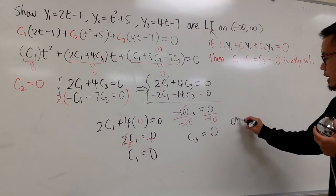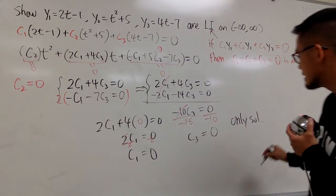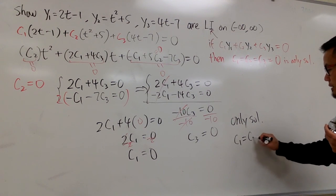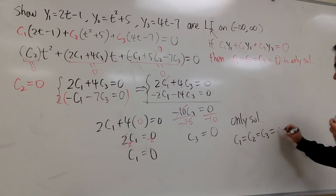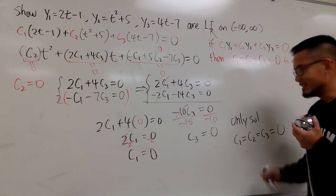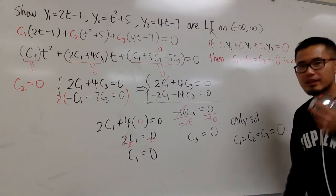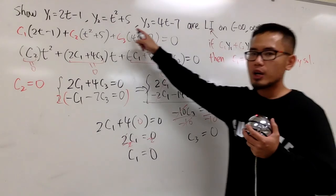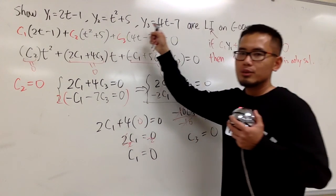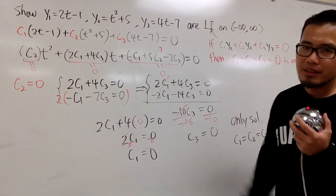So, the only solution to make this happen is that c1, which is the same as c2, which is the same as c3, they are all equal to 0. This is the quicker way to write it down, instead of putting down c1 is 0, c2 is 0, c3 is 0. This is okay. Therefore, at the end, you can argue that this, right here, these functions are linearly independent. Right?